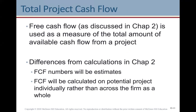Free cash flow is used as a measure of the total amount of available cash flow from a project, as discussed in chapter two. Some differences from those calculations: here free cash flow numbers will be estimates because the project hasn't happened yet — we're doing capital budgeting to estimate results. Free cash flow will be calculated on potential projects individually rather than across the firm as a whole.